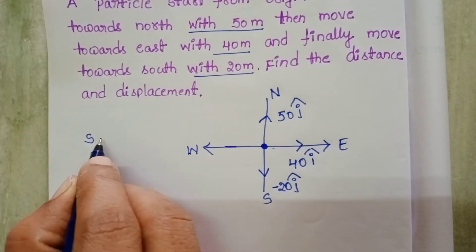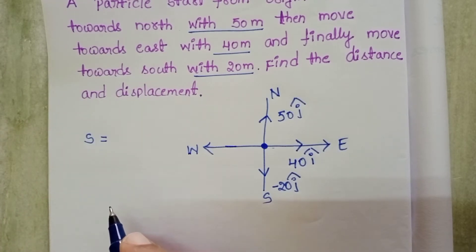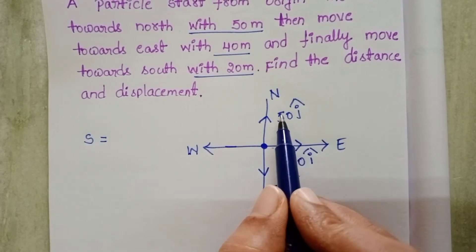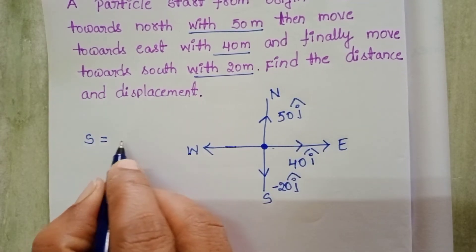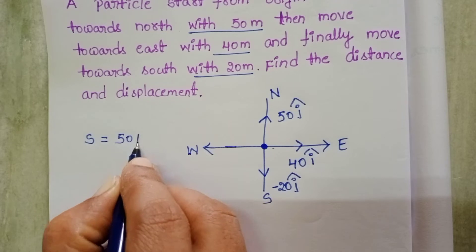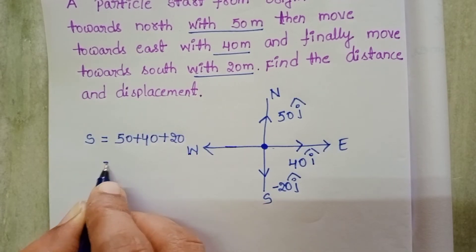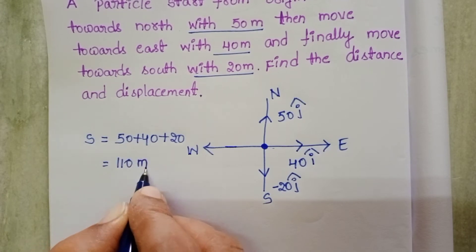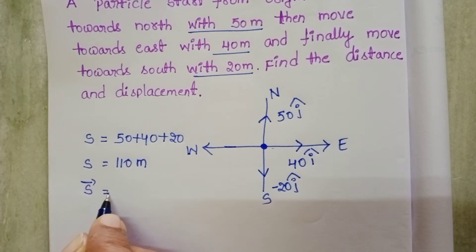To find the distance, no vector representation is needed. This is simply the length of the path covered by the particle. Along east 40 meters, north 50 meters, and south 20 meters. So the total distance is simply 50 plus 40 plus 20, which equals 110 meters.